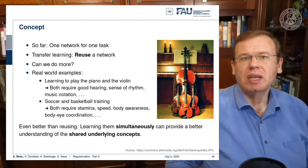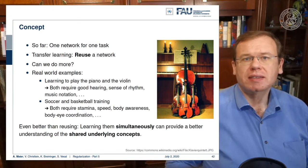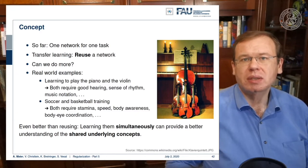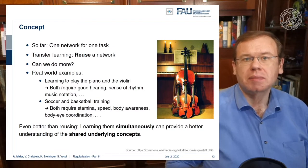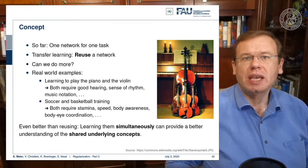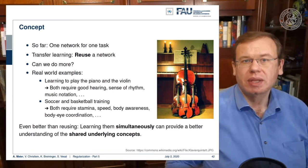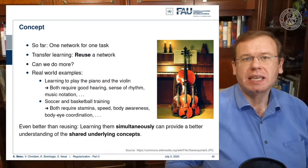There are some real-world examples. If you learn to play the piano and the violin, both tasks require good hearing, a sense of rhythm, music notation, and so on — some things can be shared. Similarly, soccer and basketball training both require stamina, speed, body awareness, and body-eye coordination. So if you learn one, you typically also get benefits for the other.